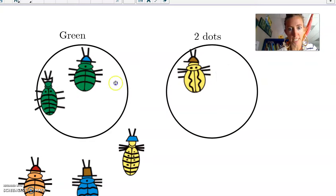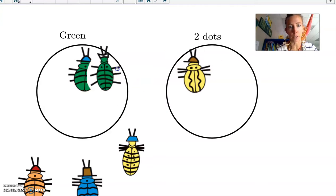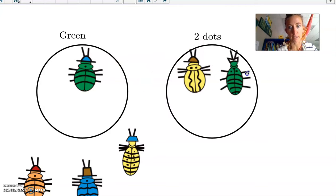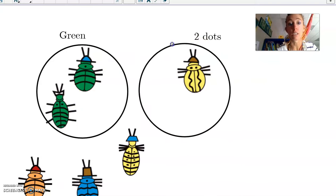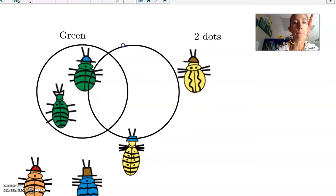What do you do? Which one does it go in? It's like, do I go here because I'm green or do I go here because I have two dots? I just don't know what to do. Well, guess what? We're actually gonna take this circle and overlap it with this one. And this here is a very famous thing in math called a Venn diagram.